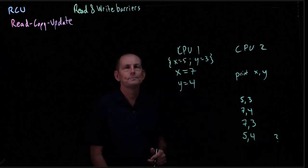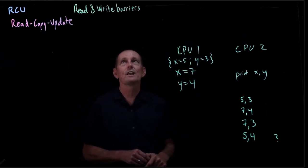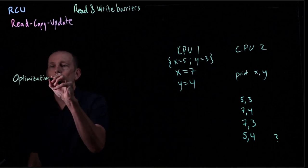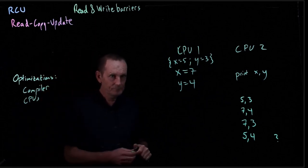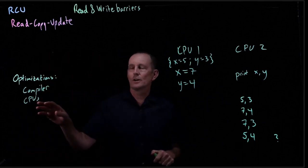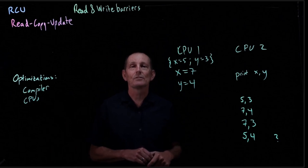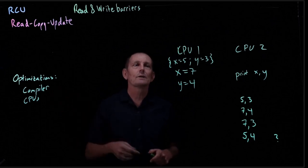How does that happen? Well, that happens from two possible different optimizations. So we have optimizations that are happening in the compiler and in CPUs. And the CPUs are, of course, architecture dependent. So some CPUs or some types of architectures will do certain types of optimizations that others don't necessarily do.